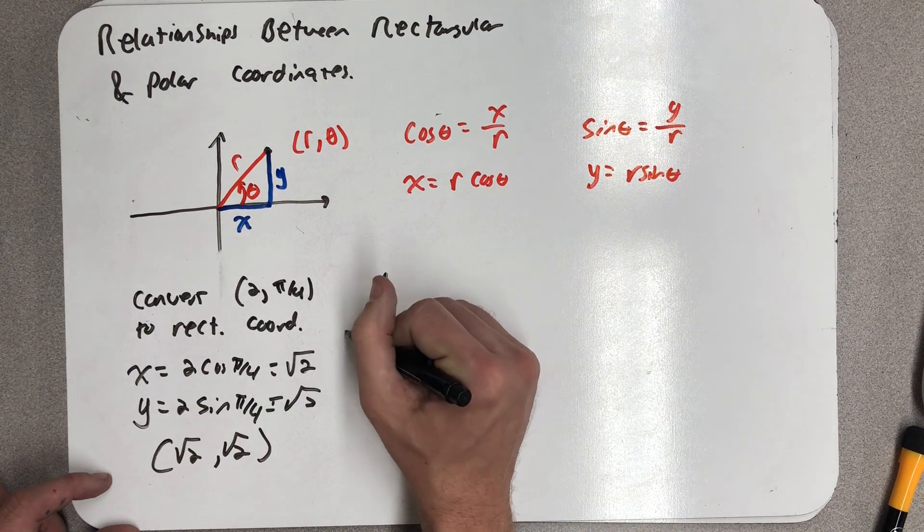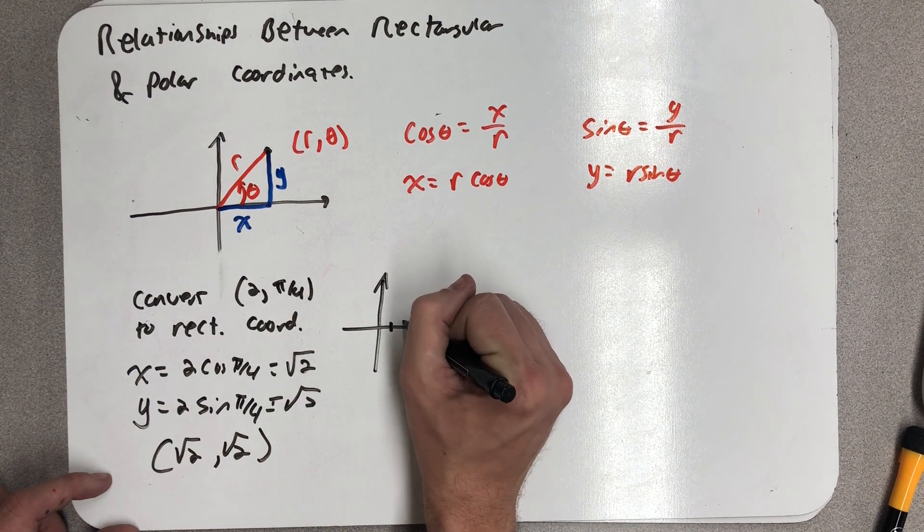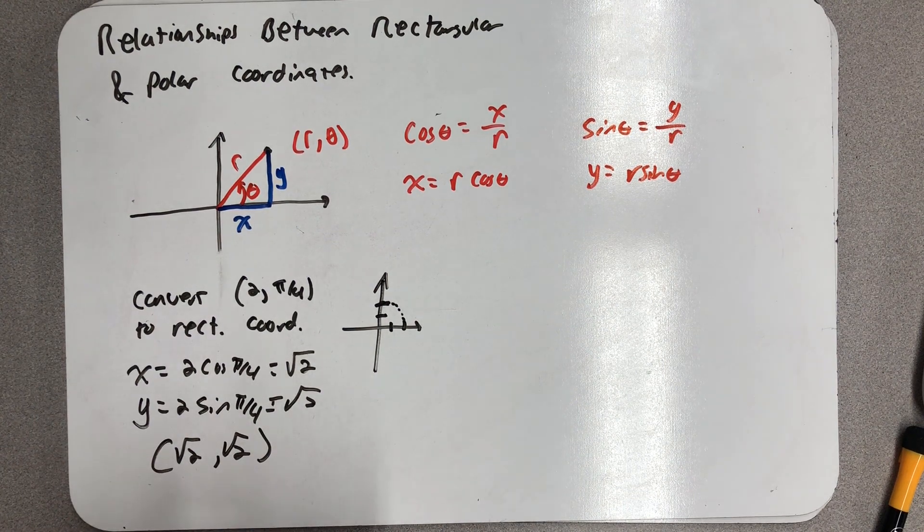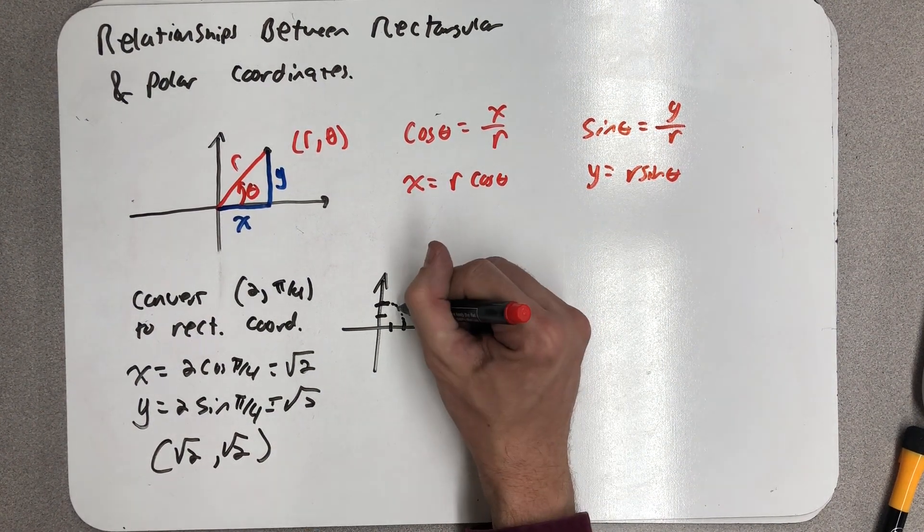So at this point, which is two units away from the origin at an angle of π/4, that makes it this point.